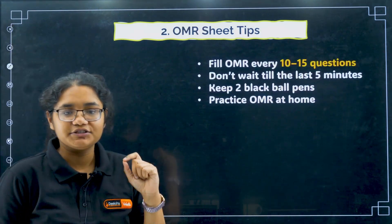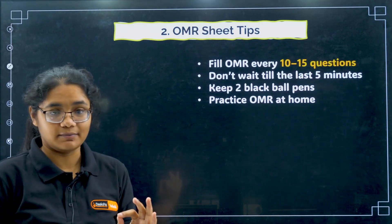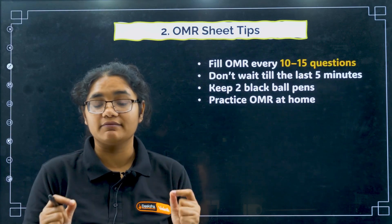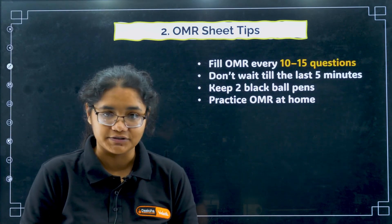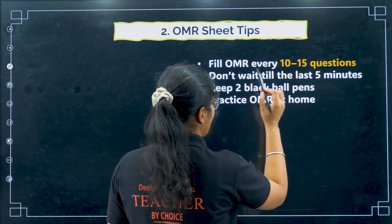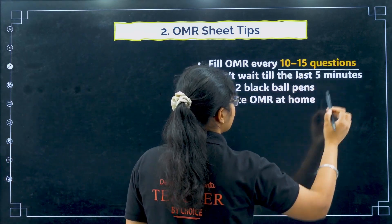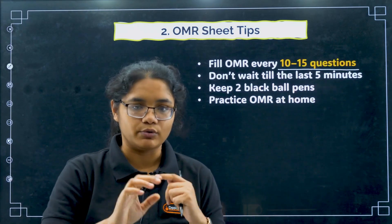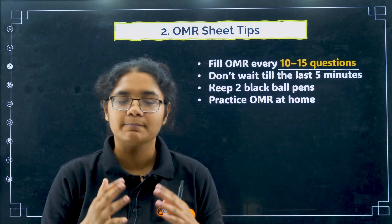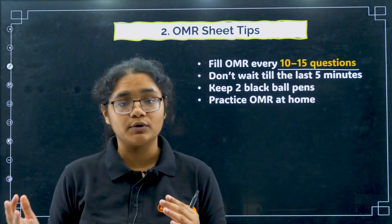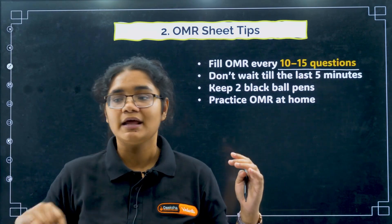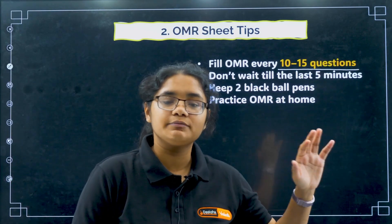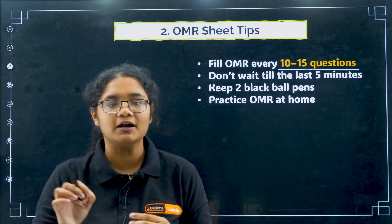Now coming to OMR sheet tips - this is very important. This is a pen and paper based examination where you have to answer on an OMR sheet. You should fill the OMR sheet after every 10 to 15 questions. Many students solve one question and then do the OMR immediately, or solve the entire paper and bubble all answers at the last - both are not good strategies. The right approach is to solve 10 to 15 questions and then start bubbling them.